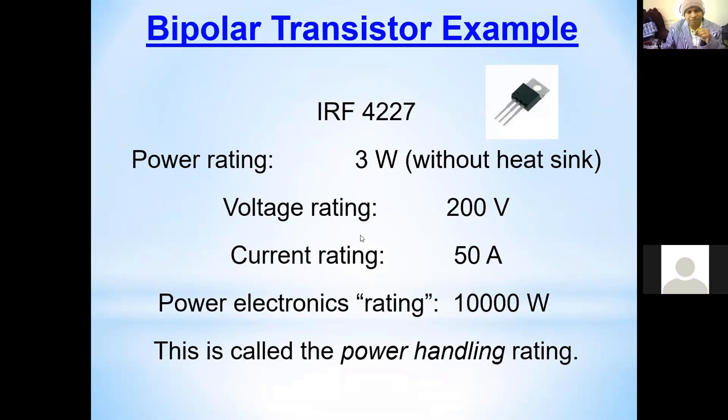For example, here we have seen one device, a MOSFET IRF 4227. This is a MOSFET from International Rectifier. You can see this is a simple MOSFET. The size of the MOSFET is a very small fraction, and the power rating of this MOSFET is 3 watts.